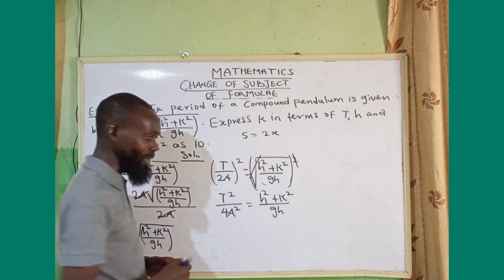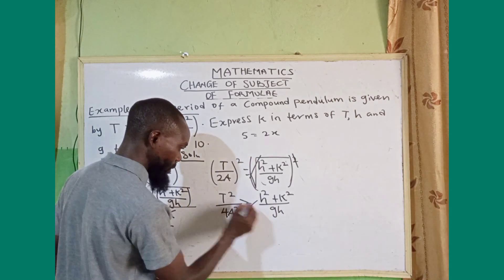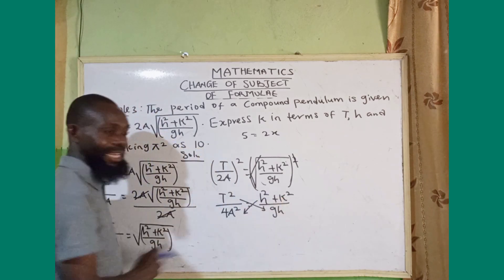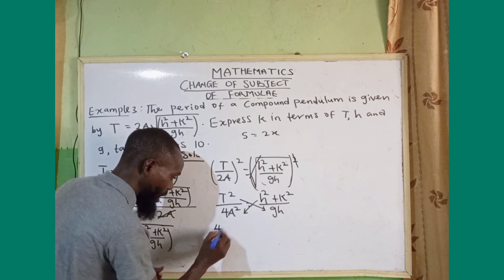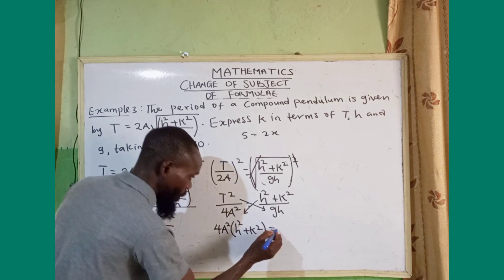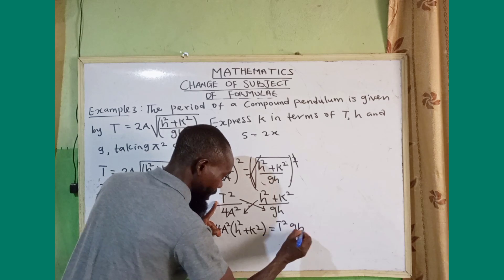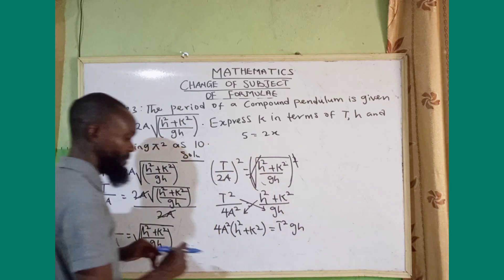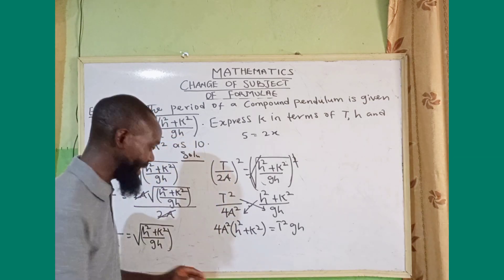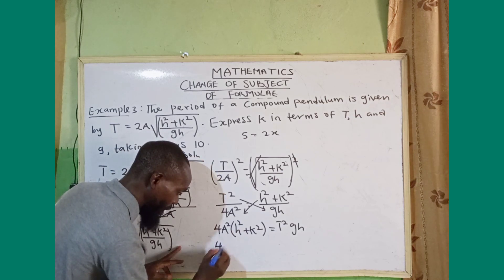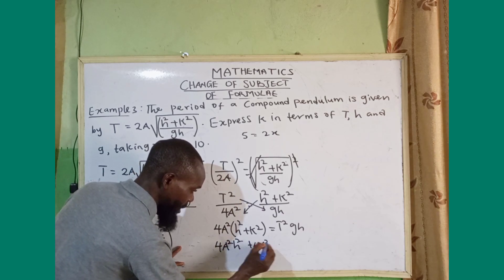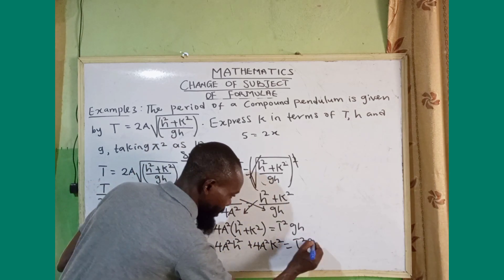The next step is to cross multiply. Cross multiplying gives 4π squared times h squared plus k squared equals t squared times gh. Now my k squared is also inside brackets, so I open the brackets: 4π squared h squared plus 4π squared k squared equals t squared gh.